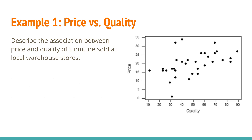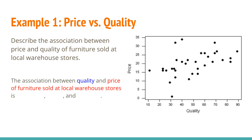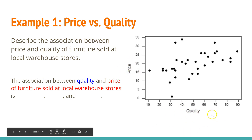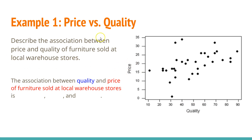Suppose I've got a situation where I'm looking at furniture sold at local warehouse stores, and we've determined the price and the quality on some sort of rating scale, put in a scatter plot with quality as the explanatory variable and price as the response variable. So let's describe the association between price and quality of furniture sold at a local warehouse. Using my sentence frame: 'The association between quality and price of furniture sold at local warehouse stores.' Now, what's the strength? To me, it looks about moderate — it's not super strong, so we'll go with moderate.